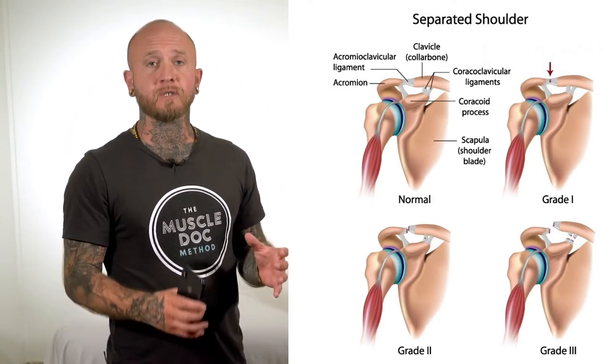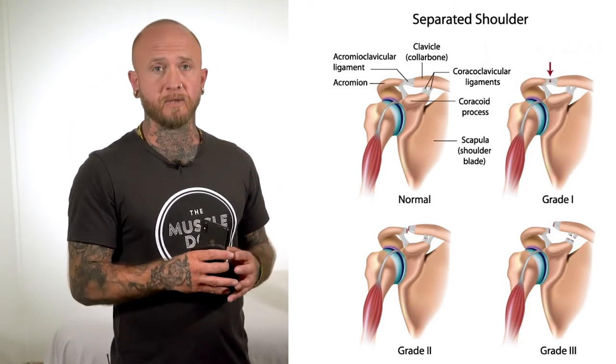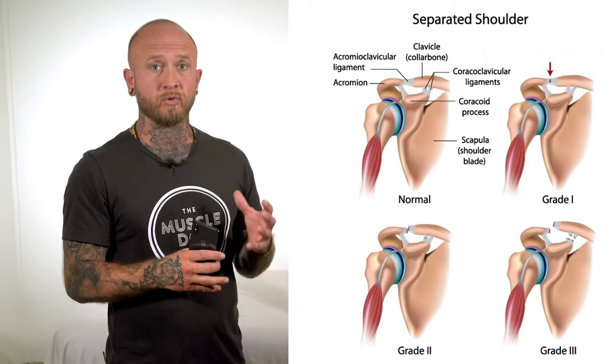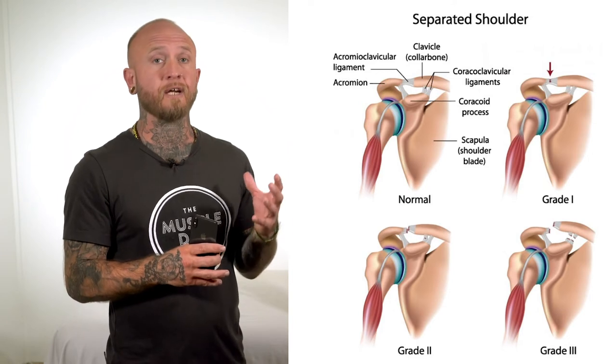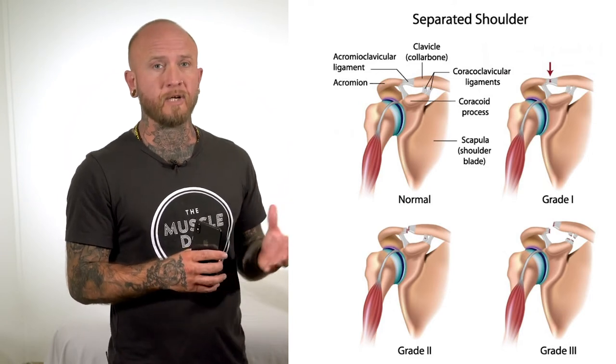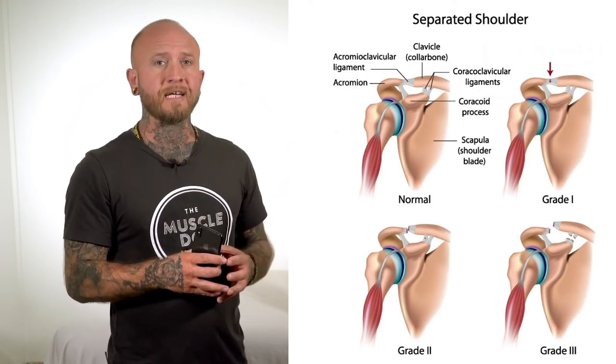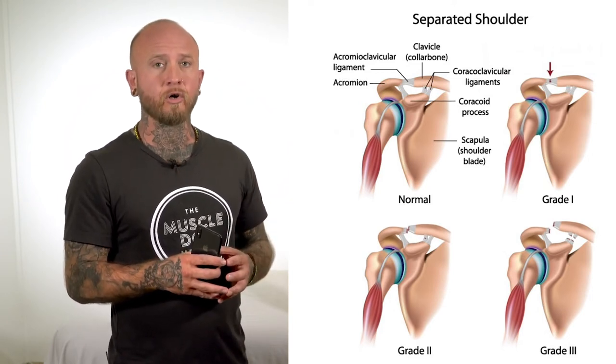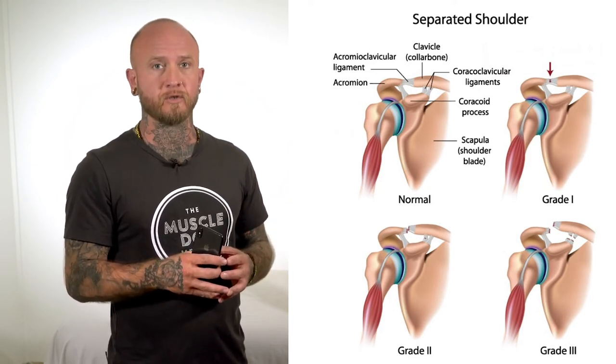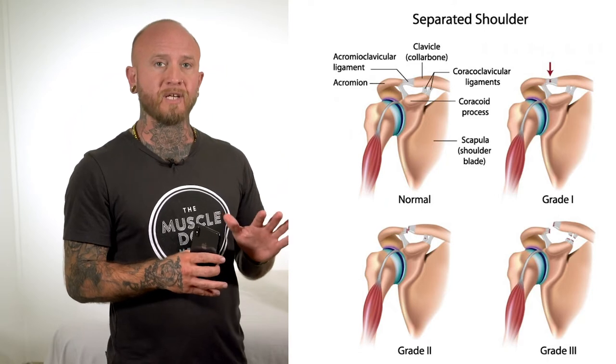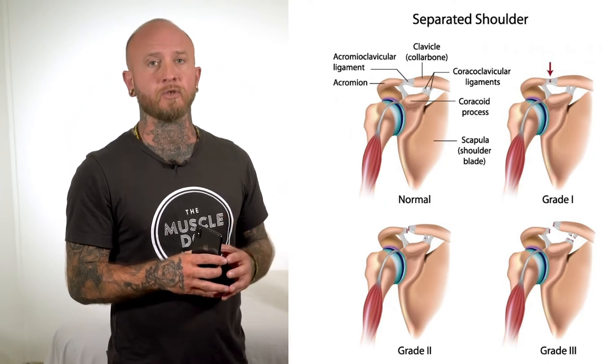Grade 5 involves superior displacement to a degree greater than Grade 3, with an increase in corticoclavicular space by 3 to 5 times the norm.